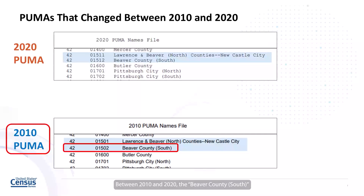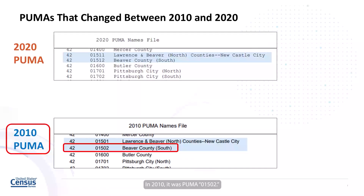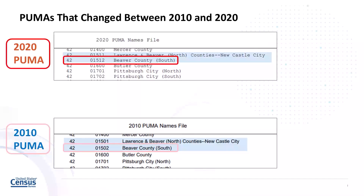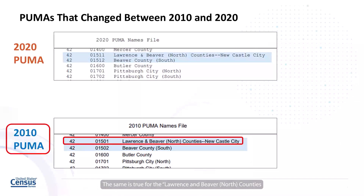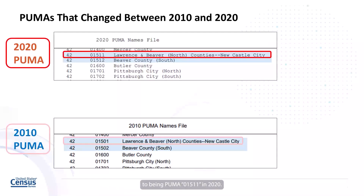Between 2010 and 2020, the Beaver County South PUMA's name did not change, but the GOID for it did. In 2010, it was PUMA 01502. In 2020, it changed to PUMA 01512. The same is true for the Lawrence and Beaver North County's New Castle City PUMA. The name itself did not change, but the GOID did — it changed from being PUMA 01501 in 2010 to being PUMA 01511 in 2020.